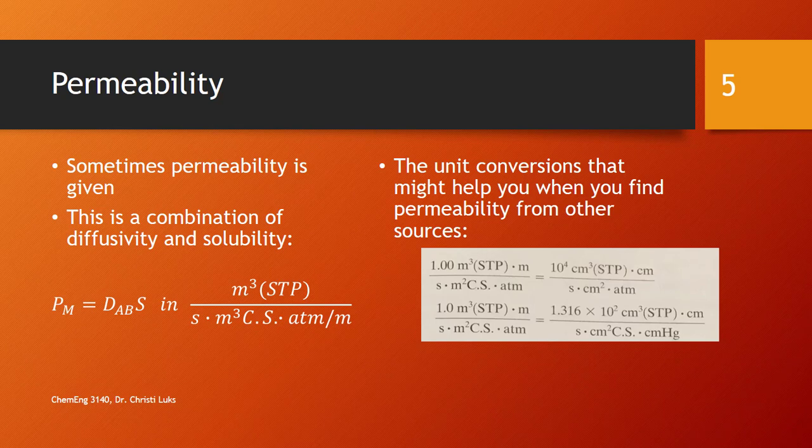Permeability, diffusivity, and solubility are all interrelated. The relationship is that the permeability is diffusivity times solubility. And you can use that to find diffusivity, for instance, if you know the permeability of your solid and the solubility. So this equation can be used to find any missing one of those three.